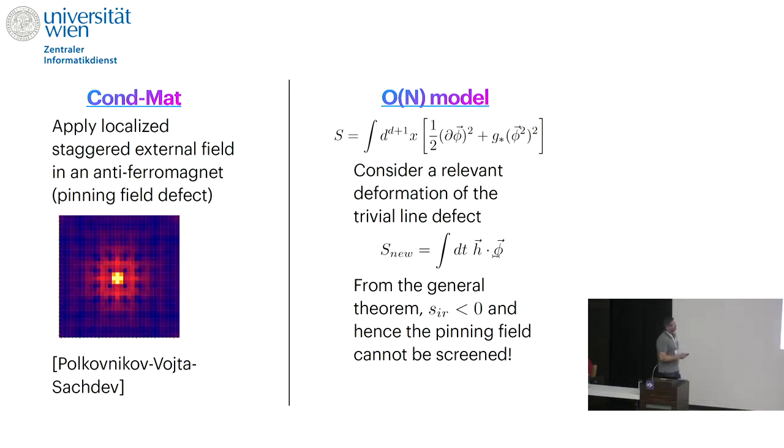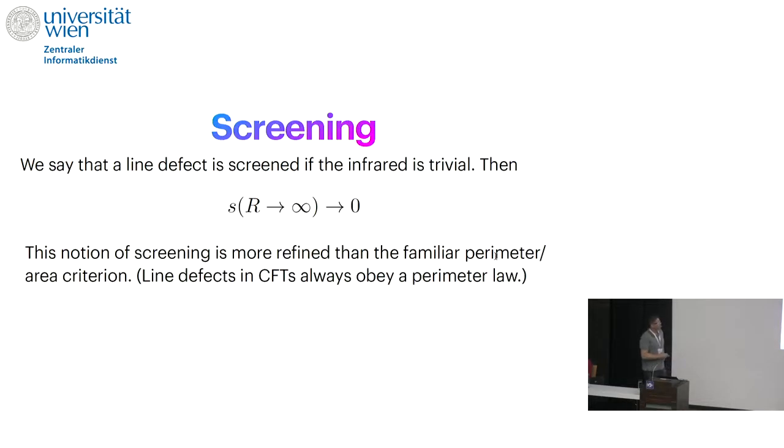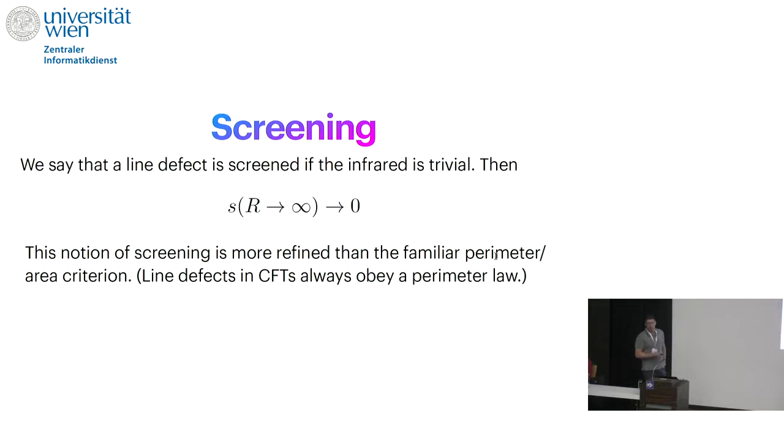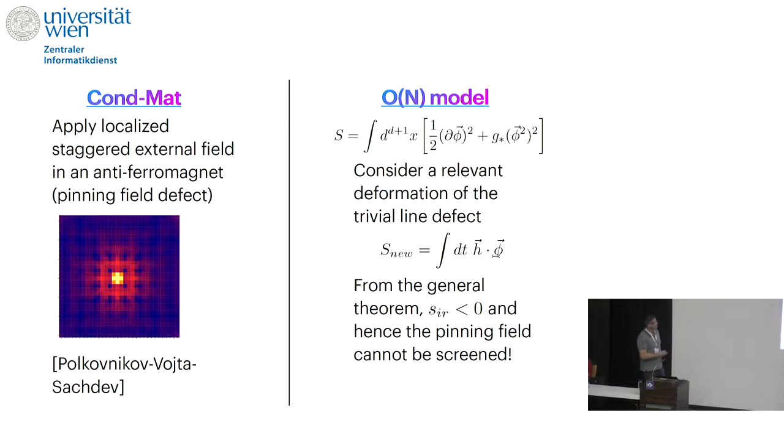On the quantum field theory side, it's the familiar O(N) fixed point, and the line defect is just where you integrate the scalar field phi or one component of the scalar field phi in the direction h along the time direction, but it's localized in space.